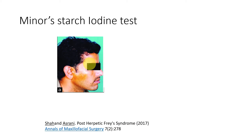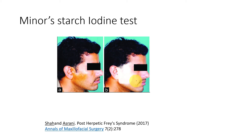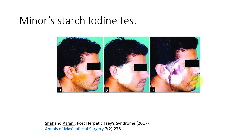This can also be tested — not only with a lemon test, but also by demonstrating that sweating is happening over this area. For example, in a case of post-herpetic Frey's syndrome published in the Annals of Maxillofacial Surgery, the patient was painted with iodine over the skin over the parotid, and then starch powder was spread over it. After the patient was presented with a sialogogue, there was sweating over this area, causing bluish-black darkening of the white starch due to the reaction with the iodine. This is called the starch-iodine test, or the Minor's starch-iodine test.